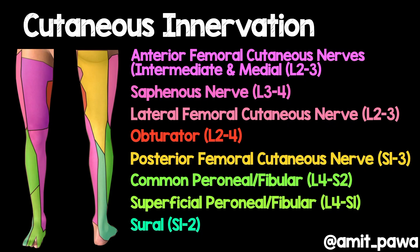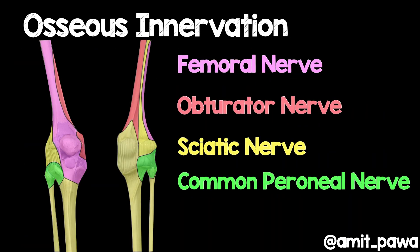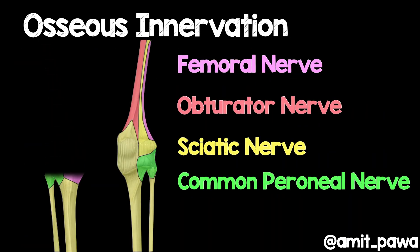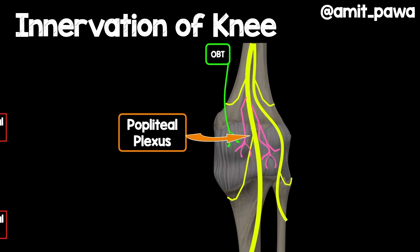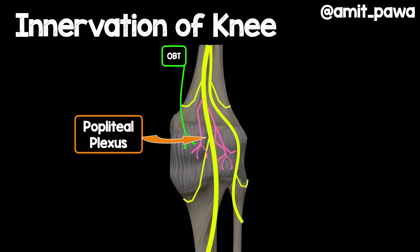The cutaneous innervation of the lower limb isn't really relevant to the IPAC block, so I'm going to focus on the osseous innervation. Looking specifically at the posterior aspect of the knee, you can see the significant contribution the sciatic nerve and the obturator nerve make. Twigs or branches from the sciatic nerve along with the obturator nerve form the popliteal plexus, which innervates the posterior aspect of the knee.